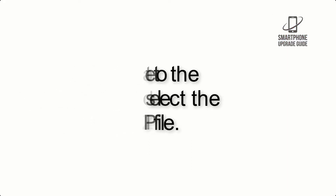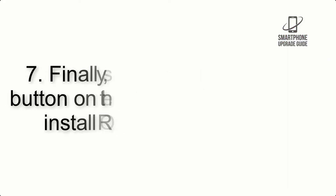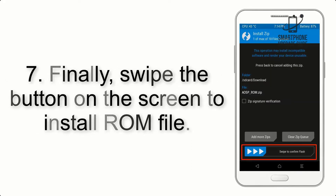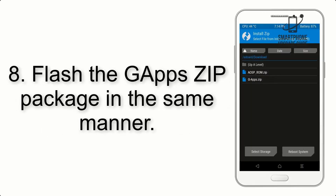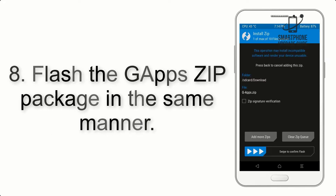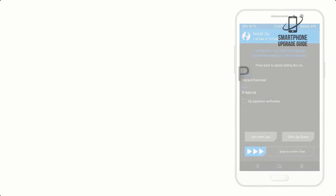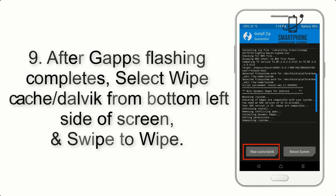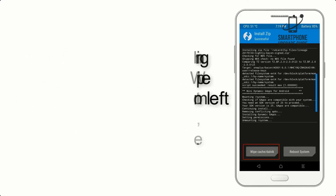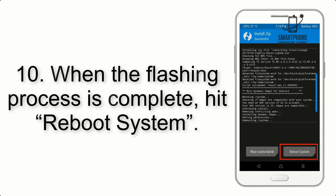Step 6: Navigate to the storage and select the ROM zip file. Step 7: Swipe the button on the screen to install the ROM file. Step 8: Flash the GApps zip package in the same manner. Step 9: After GApps flashing completes, select Wipe Cache and Dalvik from the bottom left side of the screen and swipe to wipe.